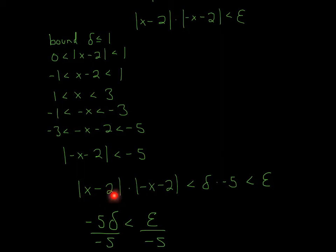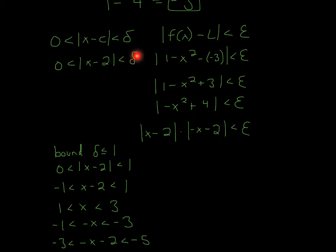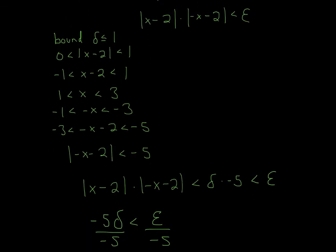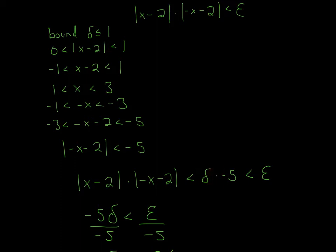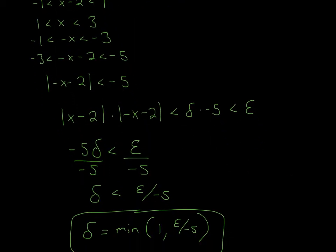|x minus 2| times |negative x minus 2| is the same as delta times 5. Here's why: absolute value of x minus 2 is less than delta, and |negative x minus 2| is less than 5. So multiplying both gives delta times 5 less than epsilon. Since we're trying to find delta, we can divide by 5: delta times 5 less than epsilon, divide by 5.